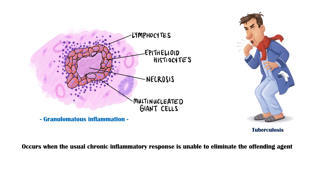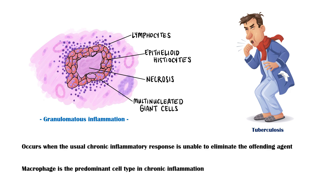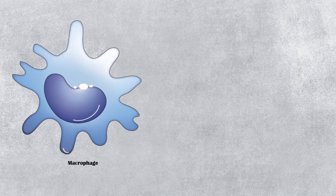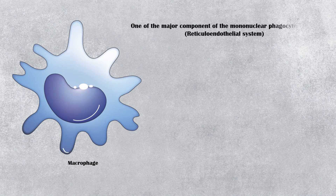Neutrophil is the major cell type in acute inflammation. However, in chronic inflammation, macrophage is the predominant cell type. Macrophage is one of the major components of the mononuclear phagocyte system, also known as the reticuloendothelial system.